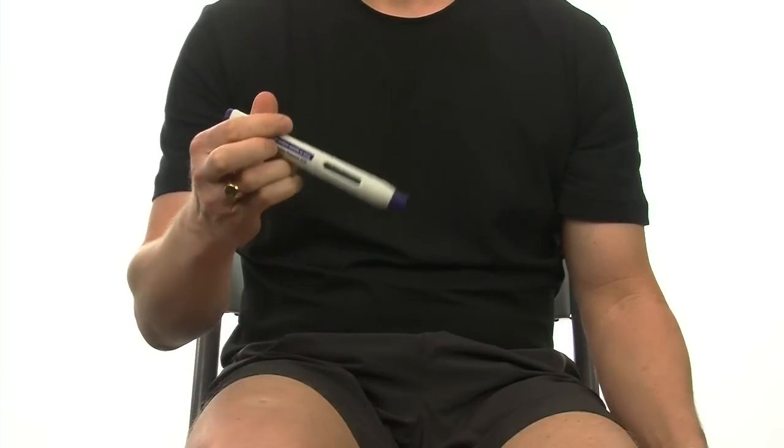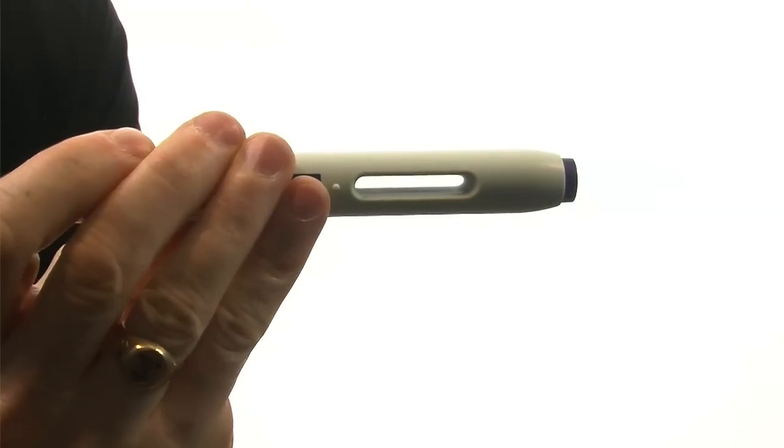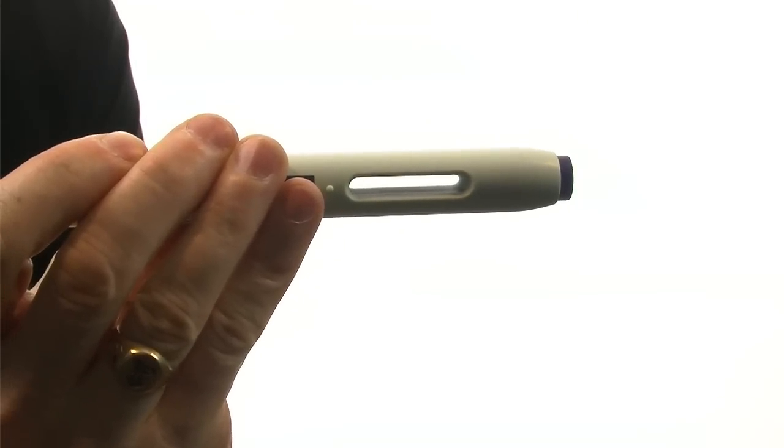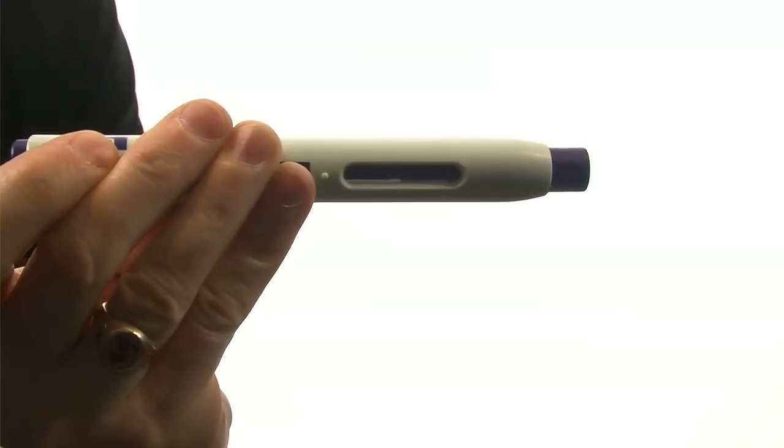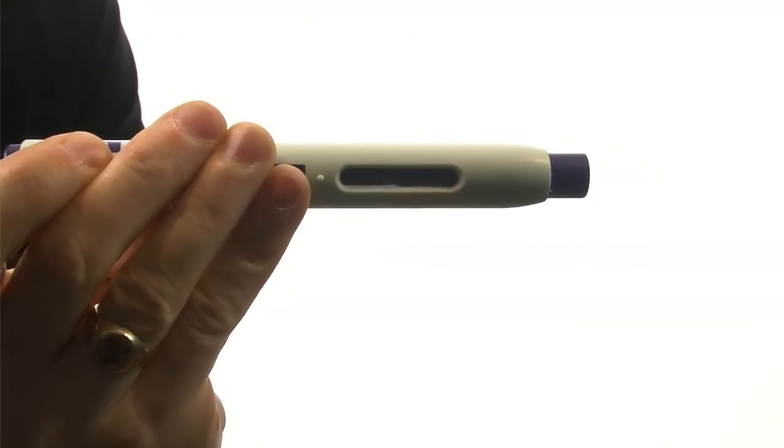When you've reached 15, remove the auto-injector and look at the medication window. It should have changed color. You can no longer see the clear liquid. It should be replaced by the color of the plunger. Apply pressure with a cotton gauze or tissue for about 10 seconds. It's normal to see a tiny drop of blood.